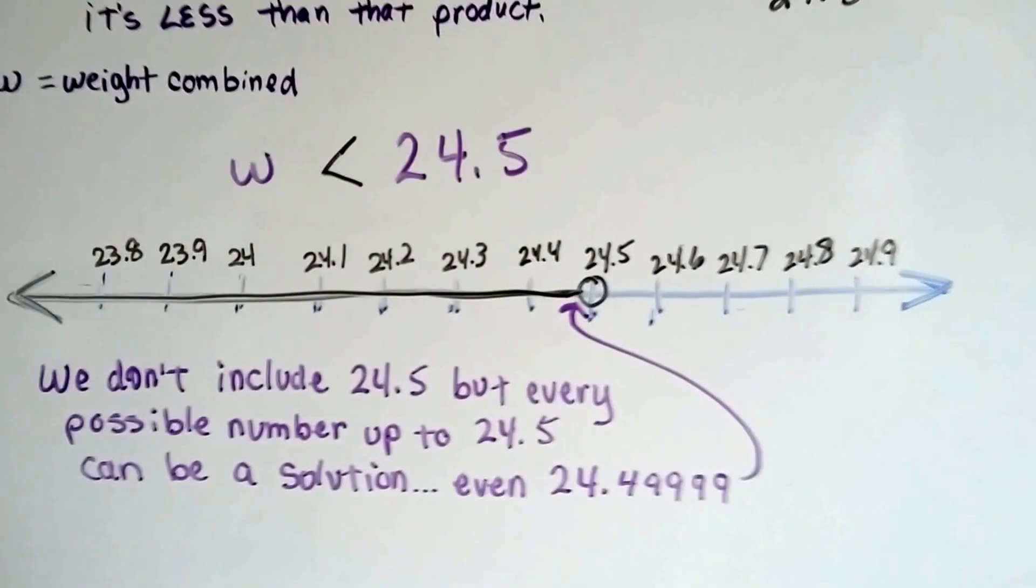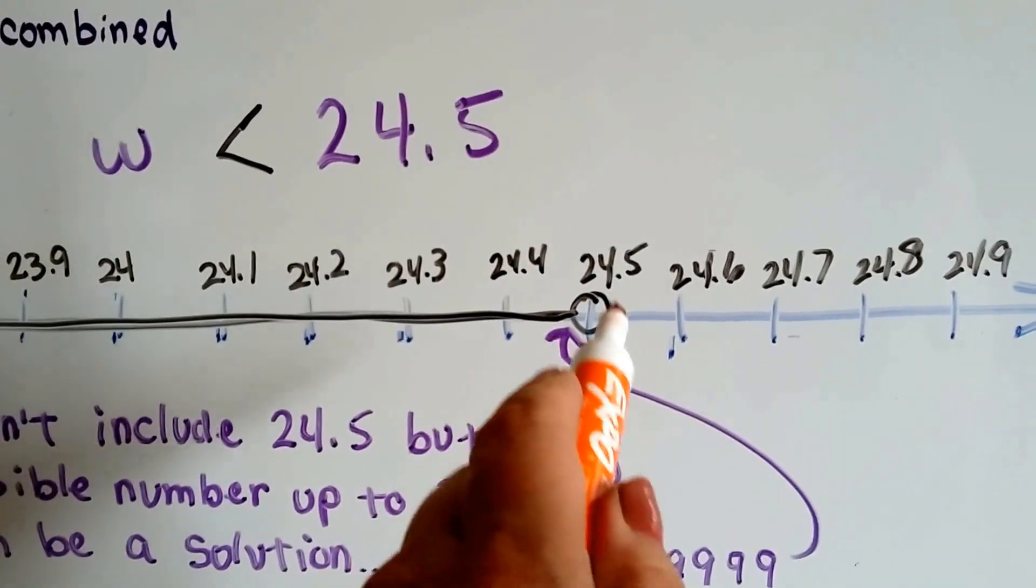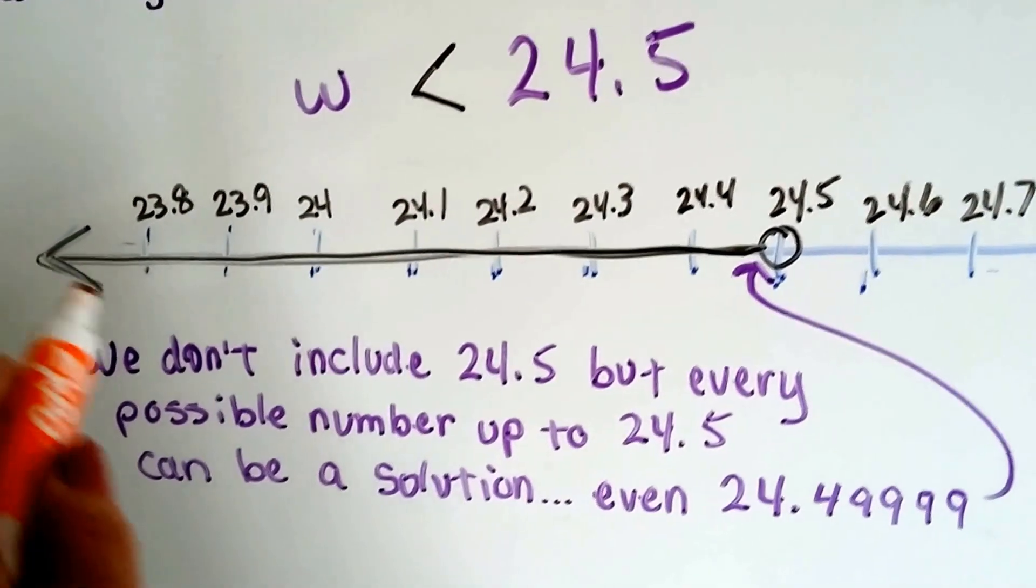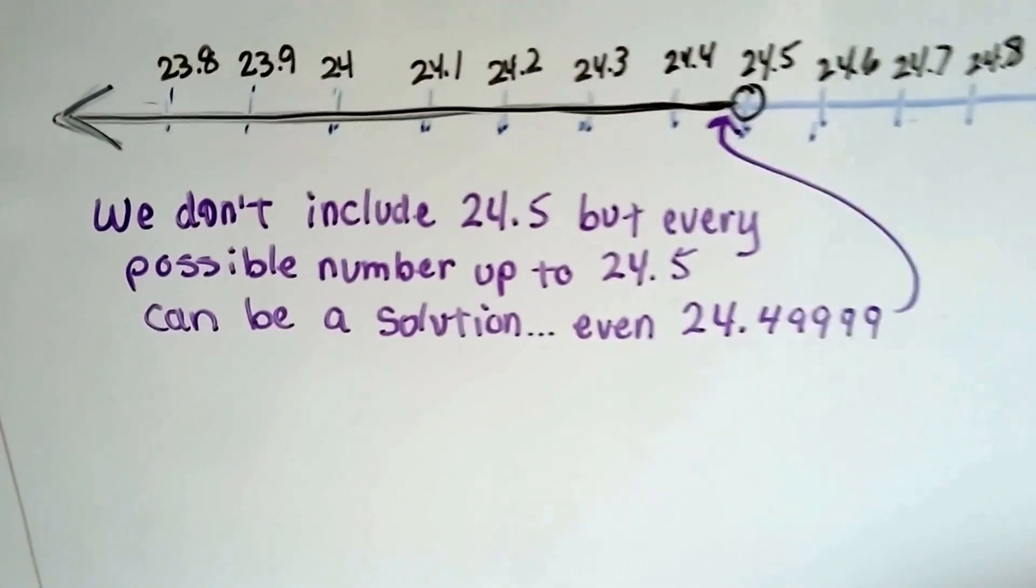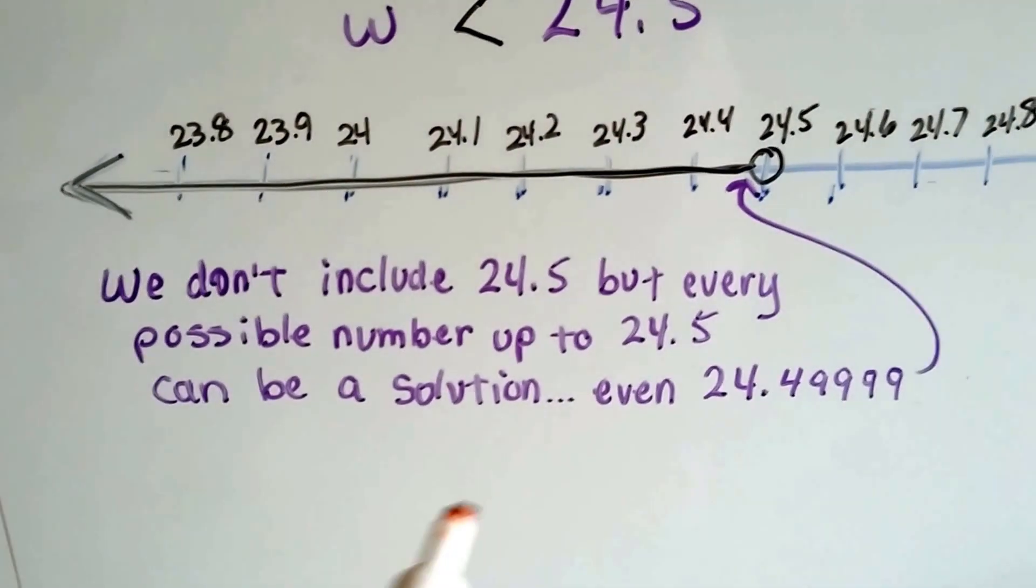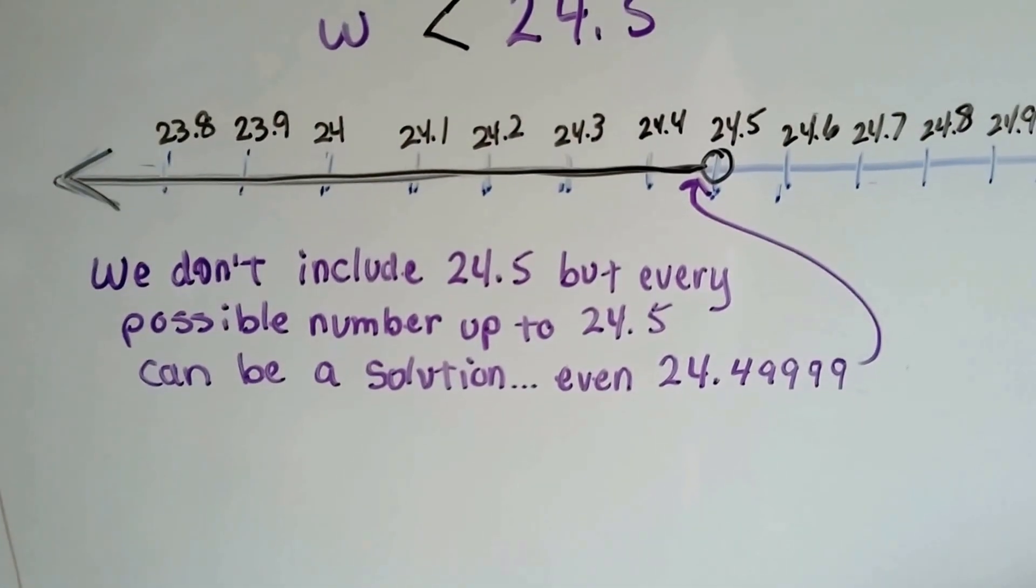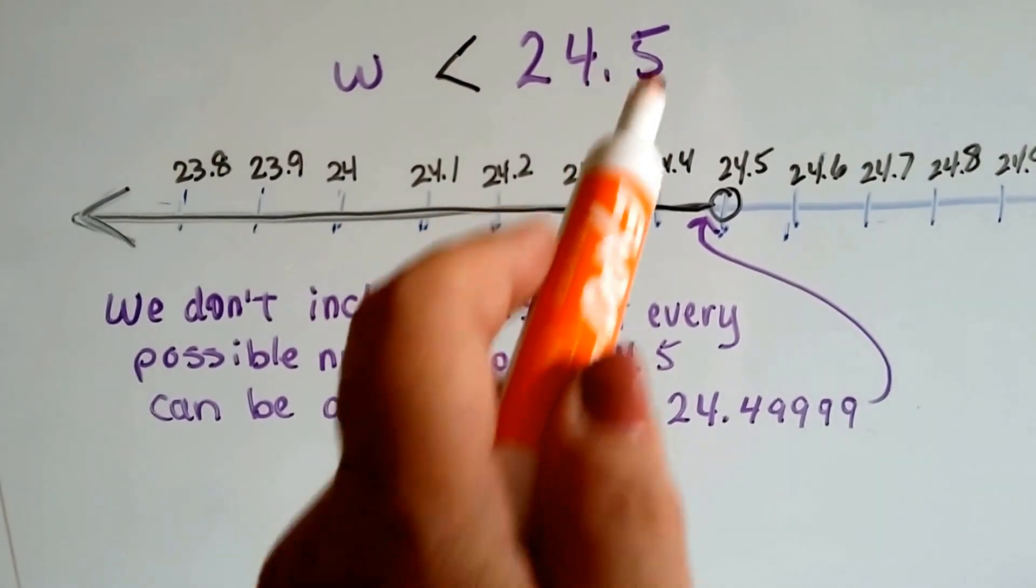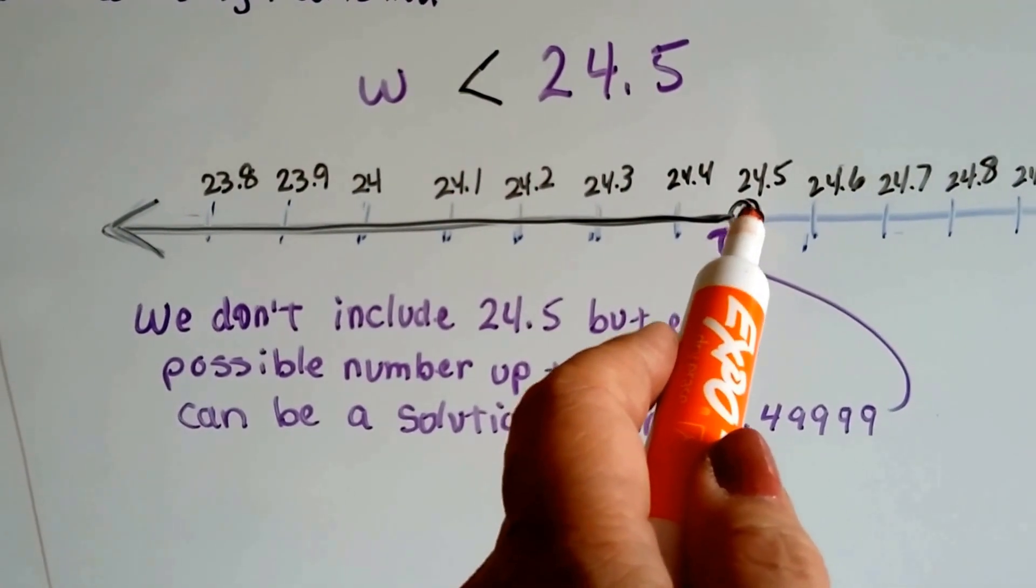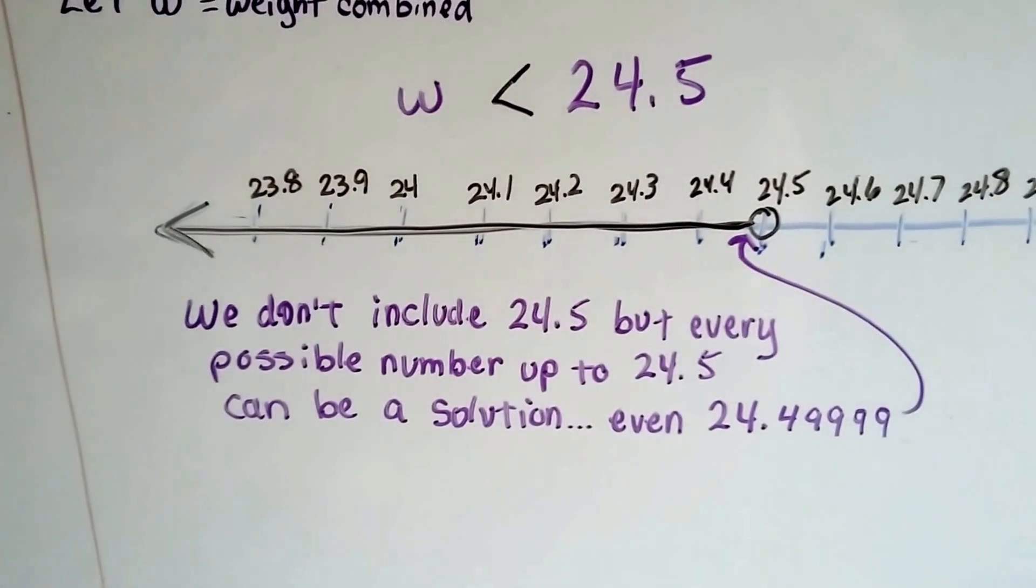So on our number line, when we graph it, here's the 24.5, but we put an open circle to say that that's not included, but everything less than it is. We don't include the 24.5, but every possible number up to the 24.5 is included and can be a solution, even if it's 24.499999, just as long as it doesn't hit .5. So this tells us that 24.5 is not included, but every tiny little decimal or fraction up to it is included.